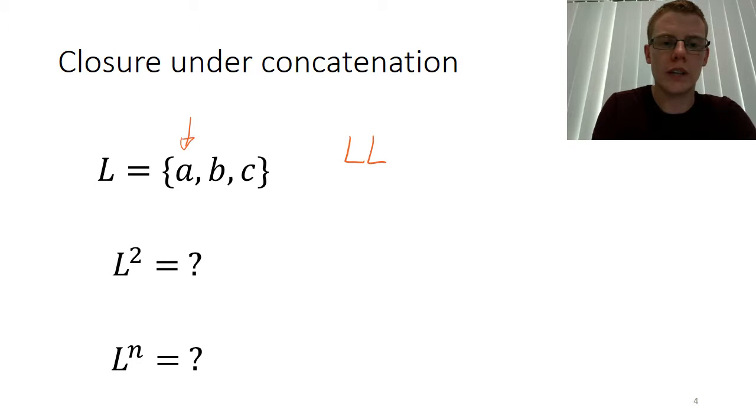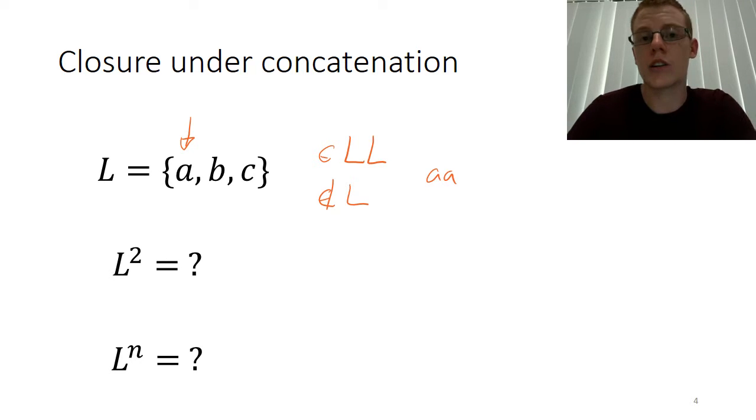But if we go through and we look, we can concatenate A with itself and get the string AA. So AA as a string will be in L concatenated with itself, but it is not in the original language L. So therefore it's not closed under concatenation because we've just applied a concatenation and ended up with something outside of the set.